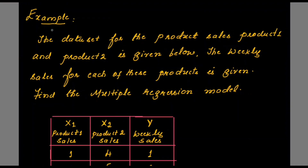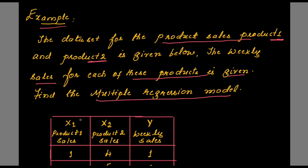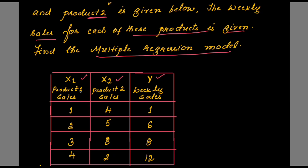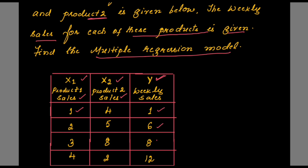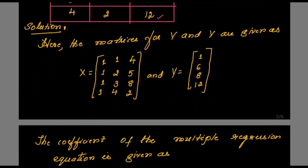Let me solve an example. The problem statement: the data set for product sales — product 1 and product 2 — is given below, and the weekly sales for each of these products is also given. Find the multiple regression model. In the data set, x1 and x2 are the two independent variables and y is the dependent variable. x1 represents the sales of product 1, x2 represents the sales of product 2, and y is the weekly sales. Weekly sales values are given in the third column — that is the dependent variable.